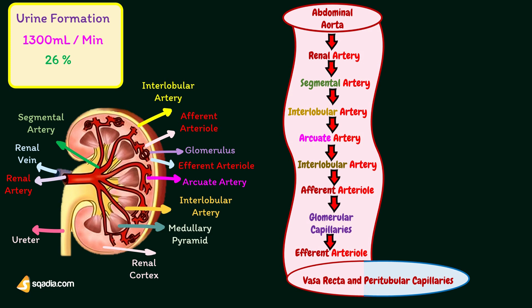Peritubular capillaries are found around the tubular portion of cortical nephrons only. The tubular portion of juxtamedullary nephrons is supplied by specialized capillaries called vasa recta. These capillaries are straight blood vessels — hence the name vasa recta. Vasa recta arise directly from the efferent arteriole of juxtamedullary nephrons and run parallel to the renal tubule into the medulla, then ascend up towards the cortex.